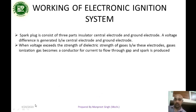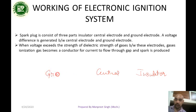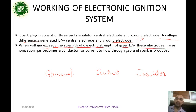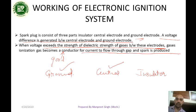A spark plug consists of an insulator, a central electrode, and a ground electrode. A voltage difference is generated between the central electrode and the ground electrode. When the voltage exceeds the dielectric strength of the gas between the electrodes, the gas becomes ionized and a good conductor for current to flow through the gap, and a spark is produced.